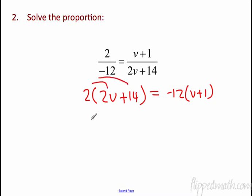4V plus 28 equals negative 12V minus 12. All right, everybody get that? Did I do that right? So I'm cross-multiplying here. Well, I probably wrote these on the wrong side, didn't I? That's okay. They're equal to each other. You can write them either way. So now you want to solve this equation.